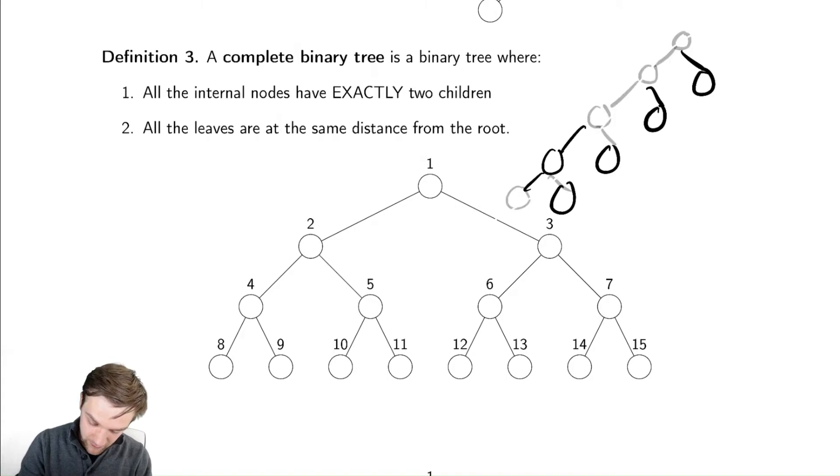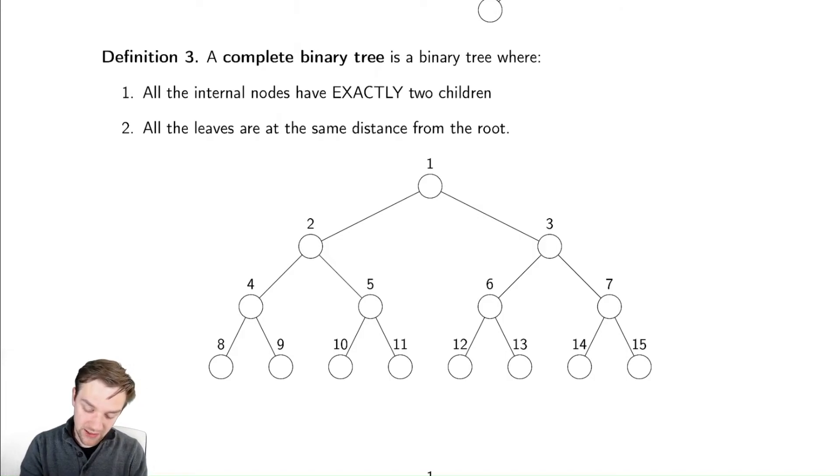And let's check if the other definition would be sufficient. The other part of the definition is, all of the leaves are the same distance from the root. Can I draw a tree that breaks our understanding of complete with that? Well, that's kind of easy too. I can draw a tree like this, where I have no children except on the left. There's exactly one leaf here.